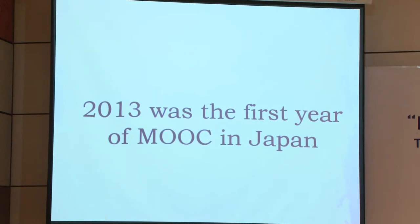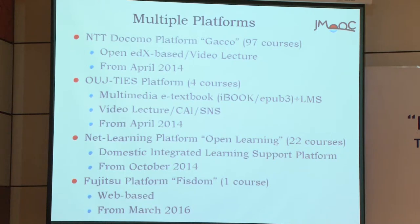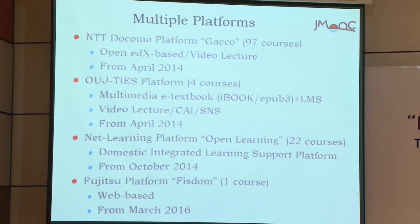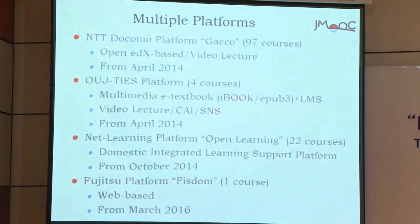In our case in Japan, 2013 was the first year of MOOC in Japan. We launched JMOOC that year. One of the characteristics of JMOOC is that we have four platforms — most MOOC providers use only one platform, but JMOOC has four. Course content providers can choose platforms. We distinguish platform providers, which are companies or corporations, from course providers, which are mainly universities.